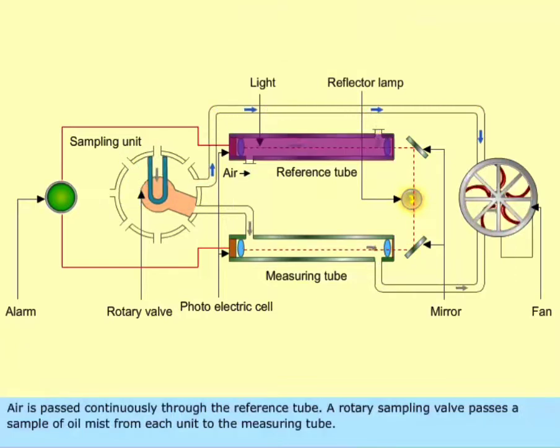Air is passed continuously through the reference tube. A rotary sampling valve passes a sample of oil mist from each unit to the measuring tube.